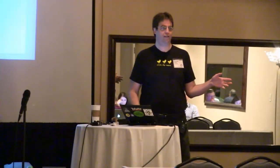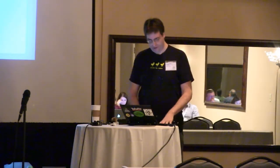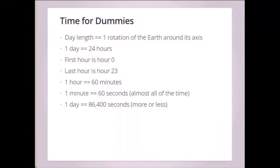Any questions so far? That was basic calendar stuff. Let's talk about time. That's based on the length of a day — one rotation of the Earth around its axis. A day mostly has 24 hours; in the DateTime module we count from hour zero to hour 23. An hour has 60 minutes. Most minutes have 60 seconds — not all of them. Therefore most days have 86,400 seconds — but again, not all of them. I mentioned leap seconds earlier and that's where this comes in. Worst thing ever.